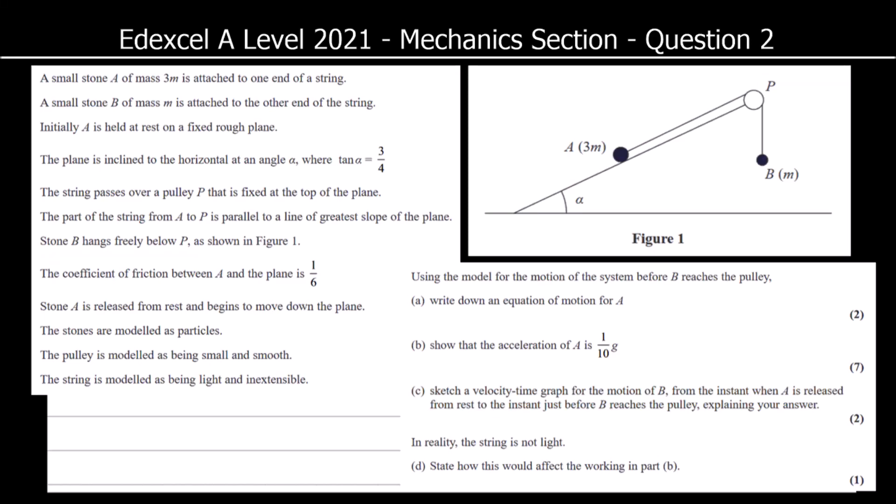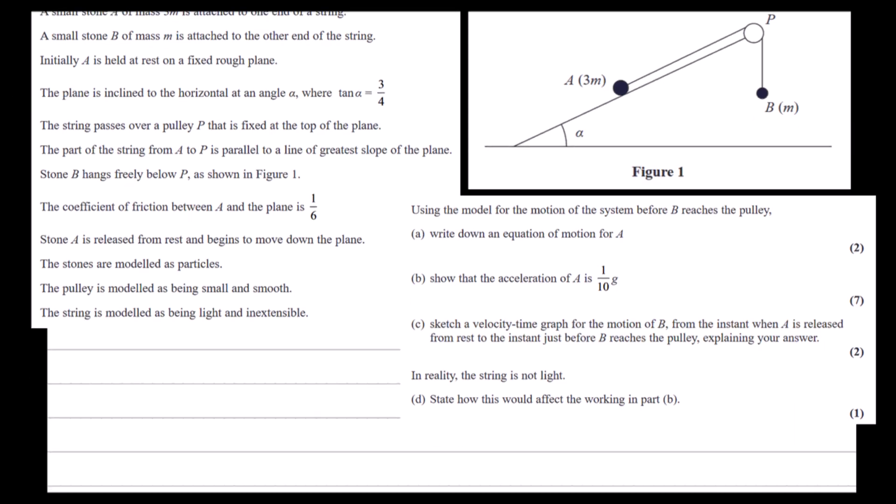A small stone A of mass 3M is attached to one end of a string. We can see that in the diagram. A small stone B of mass M is attached to the other end of the string. The plane is inclined to the horizontal at an angle alpha, where tan alpha is 3 quarters. We can see this in the diagram. Tan alpha is 3 quarters, that means we can work out cos alpha and sin alpha.